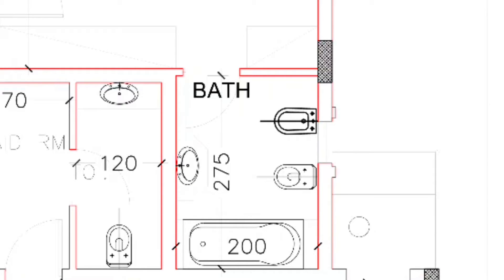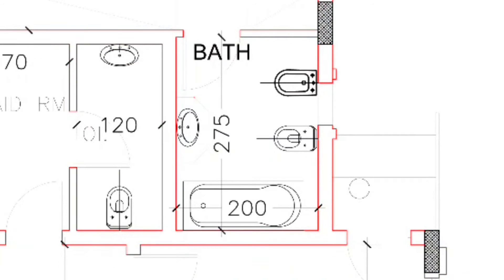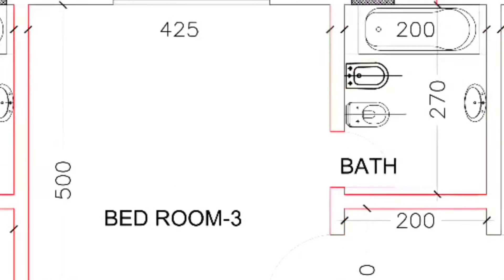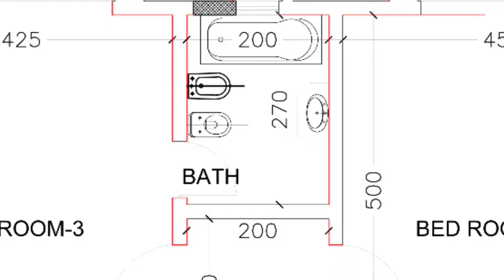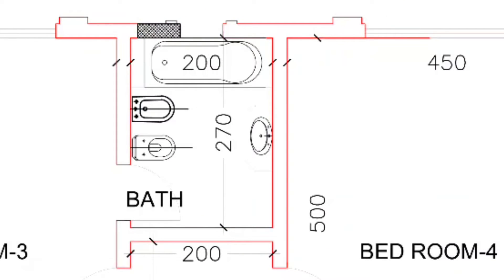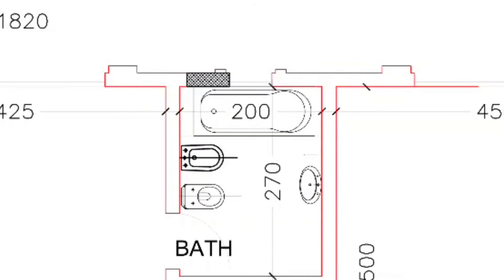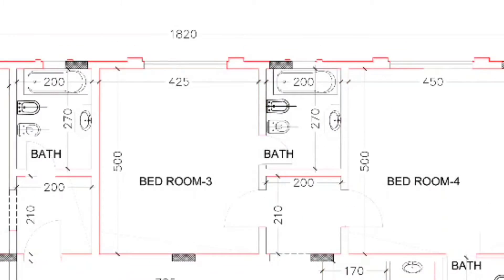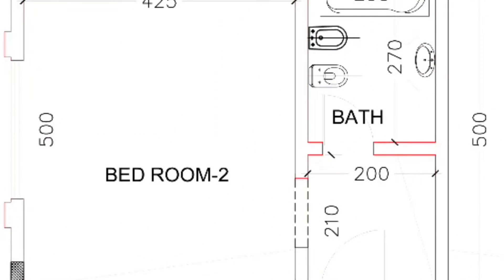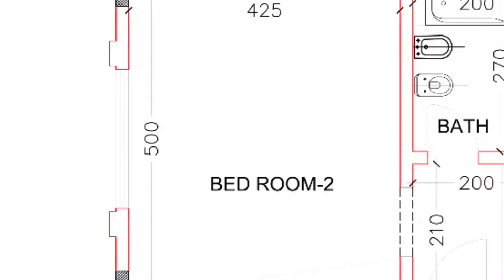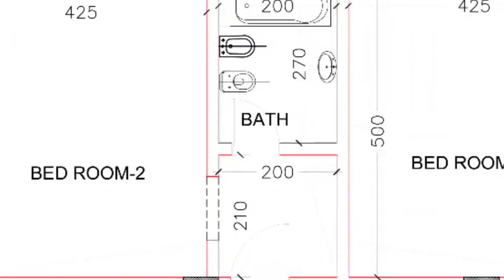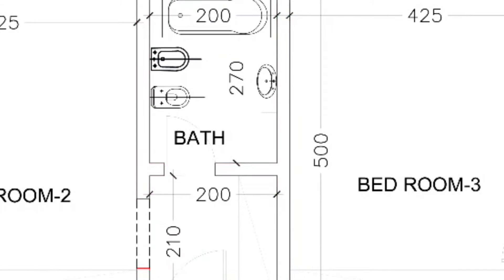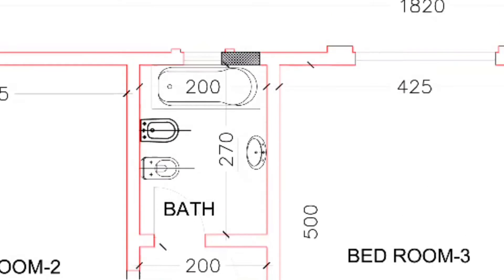The shower tray furniture has been placed in a very proper way. Now we are getting bedroom number three, 500 by 425 centimeters, with an attached bathroom of 275 by 200 centimeters — ventilation provided here along with a bedroom window. Then bedroom number two, 500 by 425 centimeters, with an attached bathroom 270 by 200 centimeters with wash basin, water closet, and shower tray.